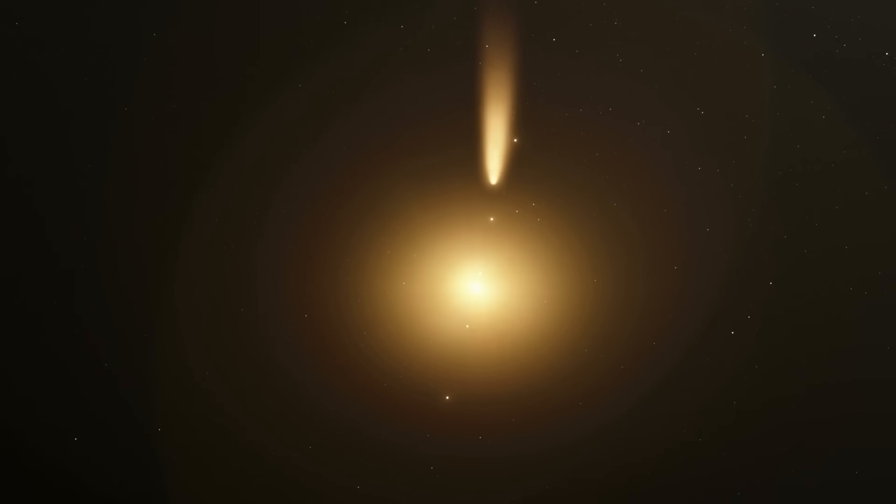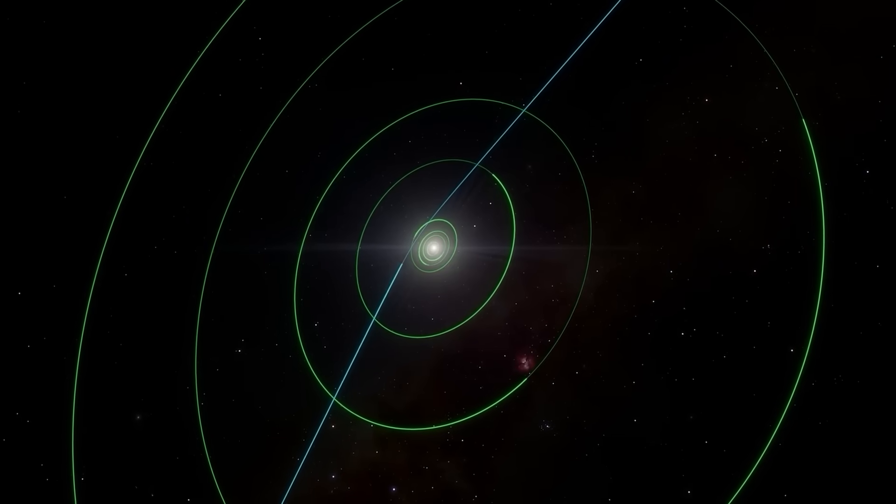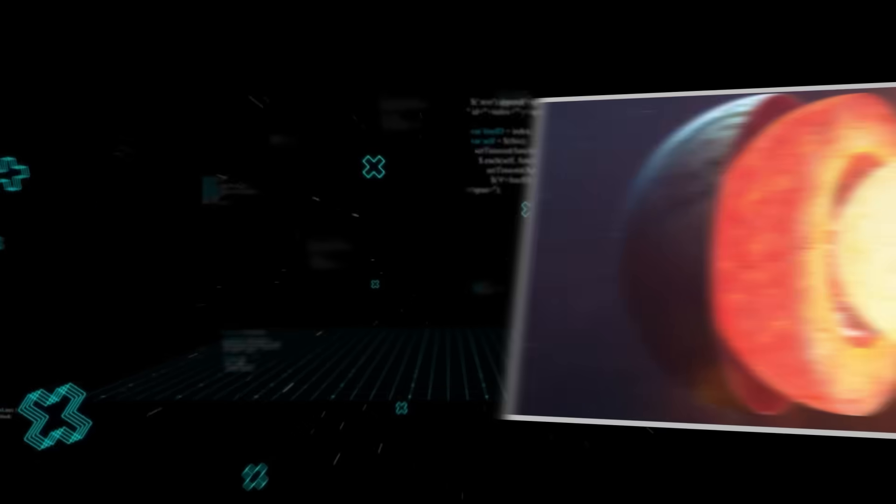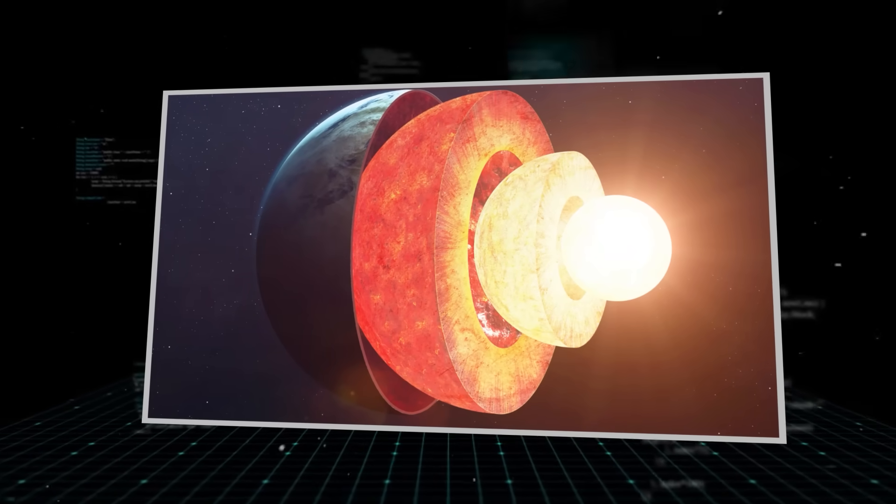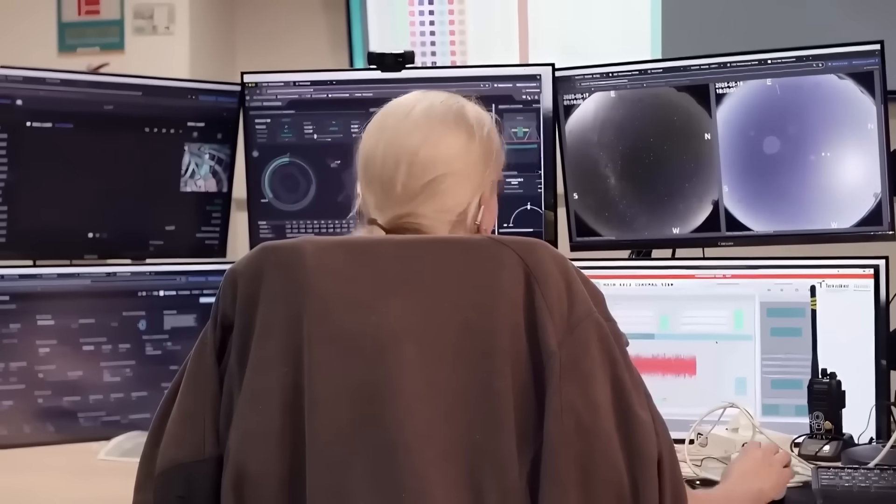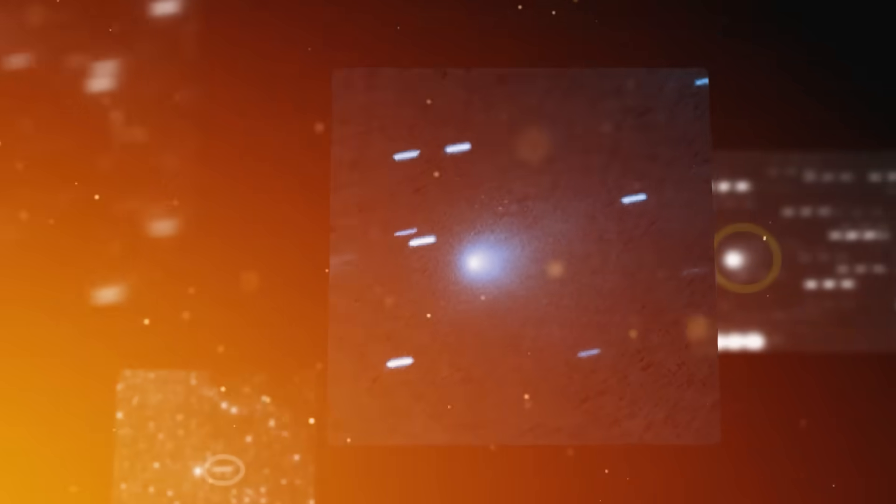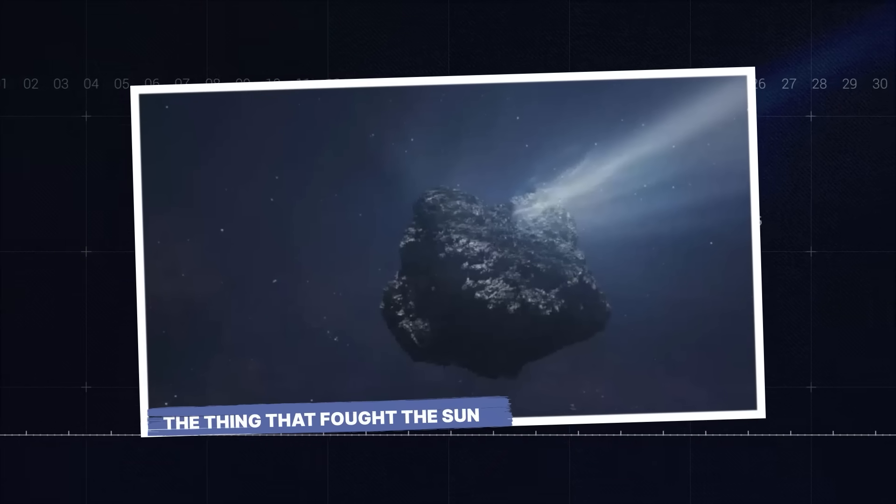This object is actively fighting the sun. It's creating a violent magnetic disruption, bending the solar wind in a way that, until now, was thought to be exclusive to planets with massive molten metal cores. Many people are crazy about this discovery because it's not just an oddity, it's a clue that something profoundly strange is lurking in our cosmic neighborhood.